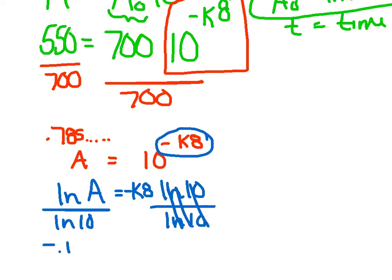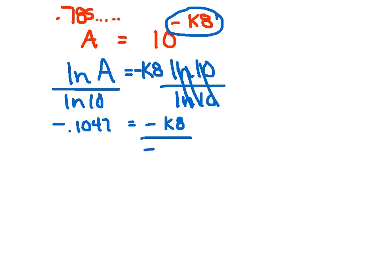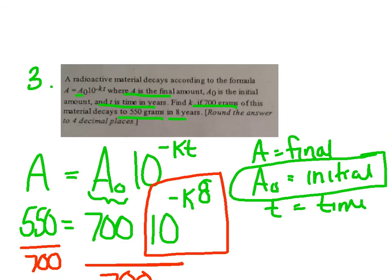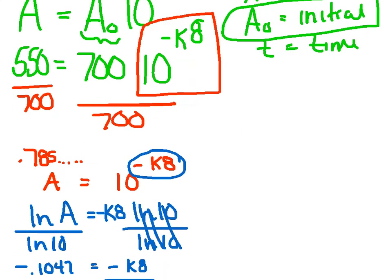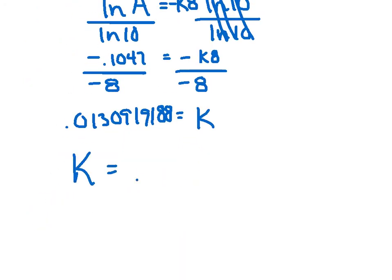Then, I get a negative 0.1047, blah, blah, blah, equals negative k times 8. And, lastly, I'm going to get k by itself, just by dividing both sides by negative 8. So, I get a final k value of 0.013, 0919, 188. And, my last step is just to go back and make sure I answer the question. Remember, that's the important part. Did you find what they wanted? So, it said, round this answer to four decimal places. Find k to four decimal places. So, I'm just going to say k equals 0.0131. And, we're good to go.